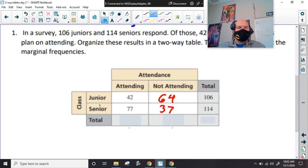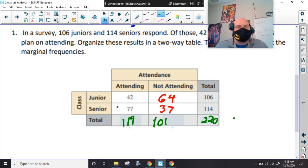And then we're going to say 114 minus 77. All right. And then we're just going to add our columns down. So, this would be a 9. What is this? 119. 42 plus 77. Yeah, 119. Okay. 64 and 37, it's 101. And either one of those added up is 220. And that's our total people.